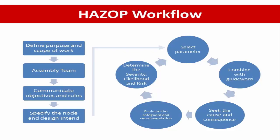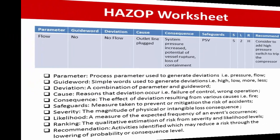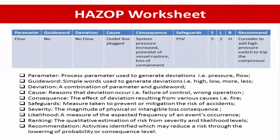Example HACCP worksheet: you can see we have columns for parameter, guide word, deviation, cause, consequence, safeguard, severity, likelihood, risk ranking, and recommendation.